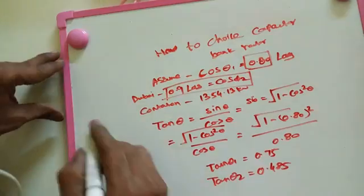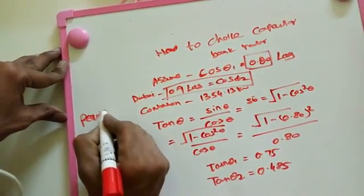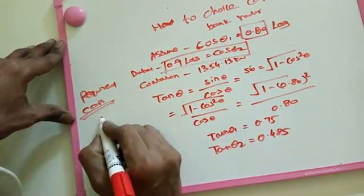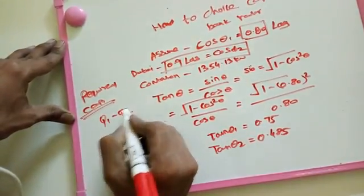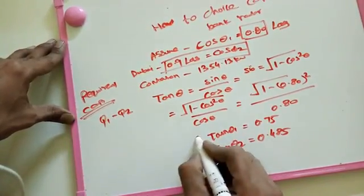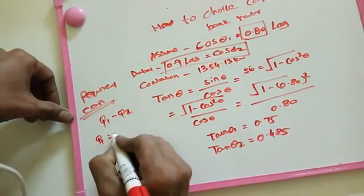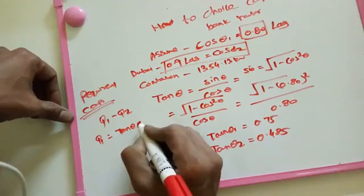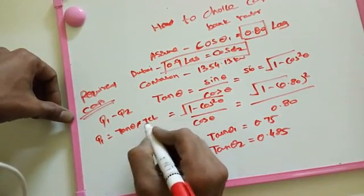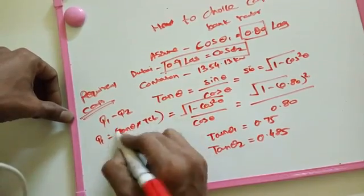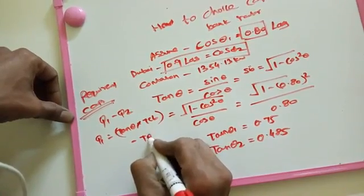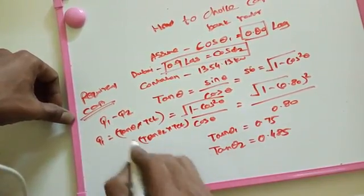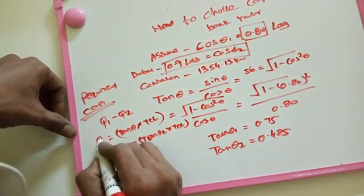Now we are going to choose the required capacitor bank. Required capacitor bank: Q1 minus Q2. Q1 is - this is the general formula for Q1 and Q2.